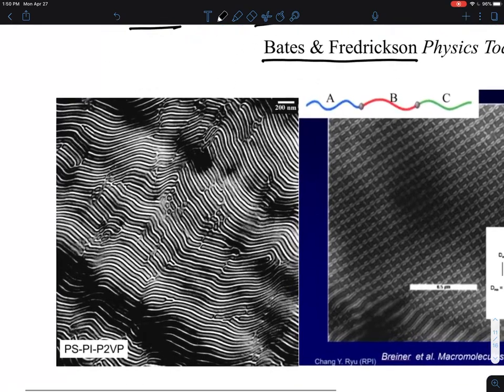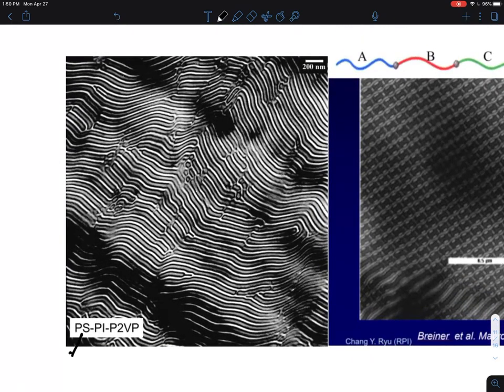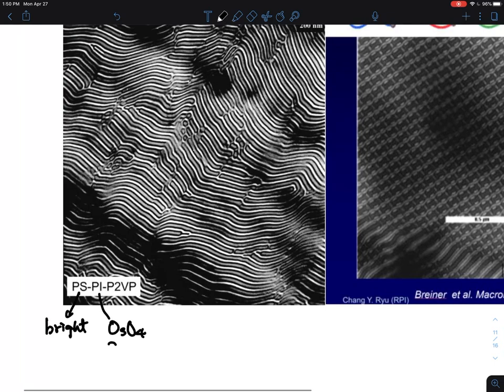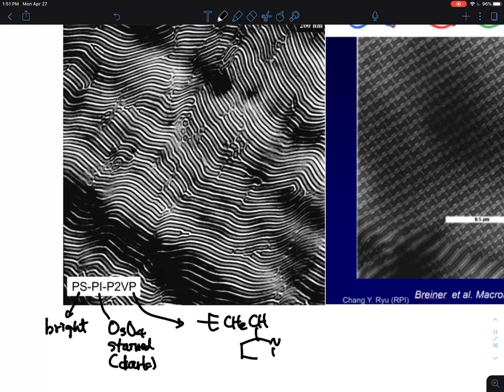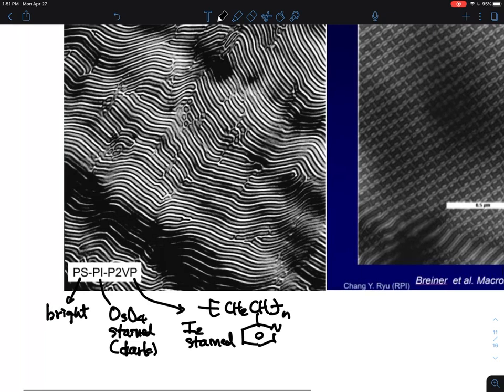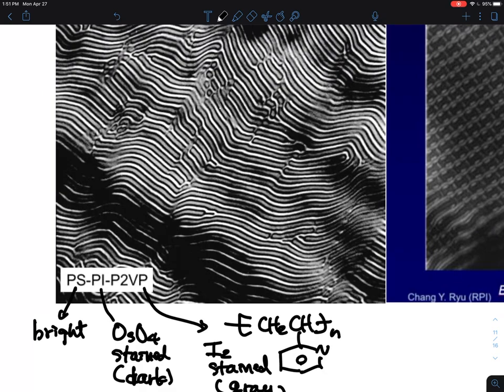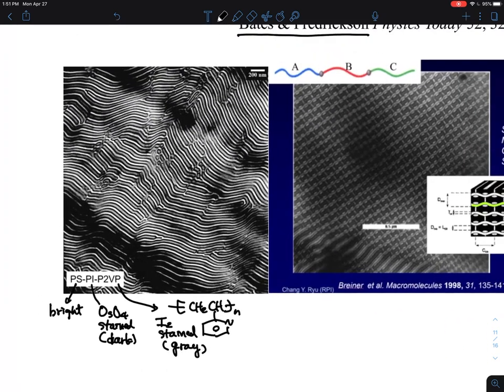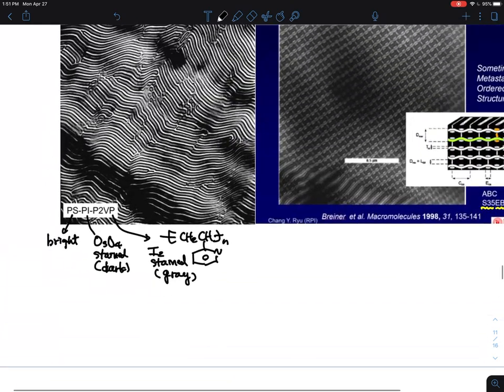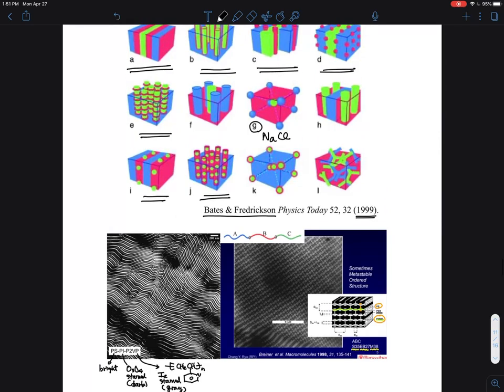This is actually polystyrene and isoprene, 2-vinylpyridine. Polystyrene is bright. Isoprene is osmium tetroxide stained, which is dark. Polyvinylpyridine looks like this domain. This is iodine stained, which is not as strongly stained compared to osmium, so it looks gray. The structure looks like that. That's the one I actually made when I was doing my postdoc at UC Santa Barbara.